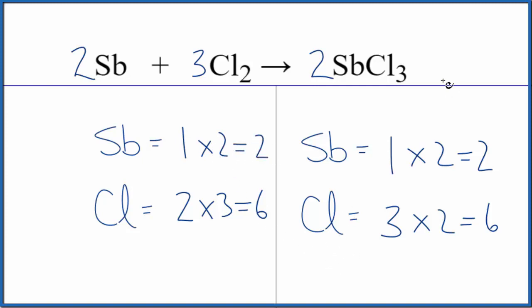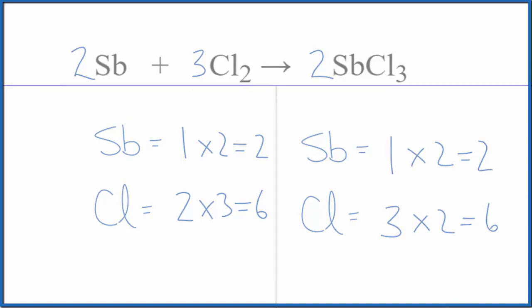The key here: when you have that odd number of chlorines, try to get that to an even number — that should make it easier to balance. This is Dr. B with the balanced equation for Sb + Cl₂. Thanks for watching.